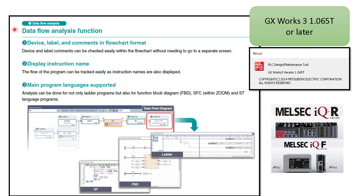I'm super excited about this — I think it's going to greatly improve the ability to troubleshoot why a bit is turning on or not turning on, very quickly. It does support devices, labels, and comments in a flowchart style. It also supports instruction names, so for example we can see a B-Move, a Block-Move. It supports all the main program languages: Function Block Diagram, SFC, Structured Text, and Standard Ladder. Let me show you what this actually looks like.